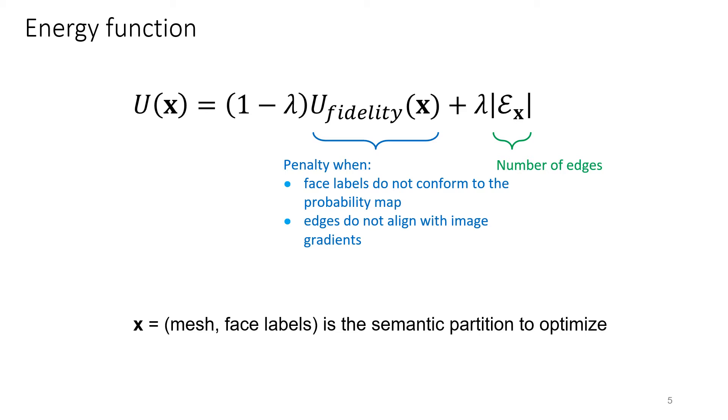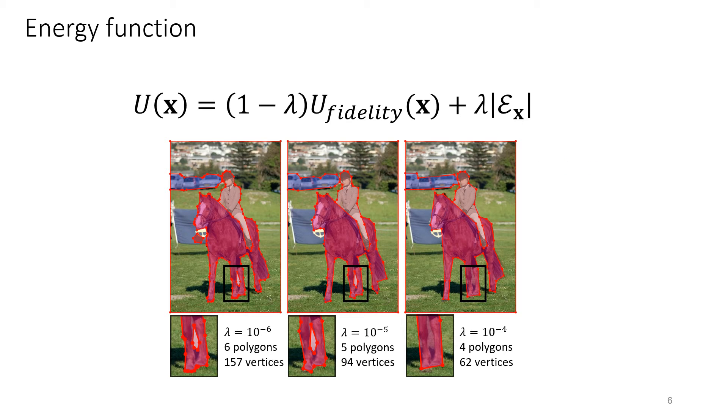The fidelity term penalizes when phase labels do not agree with the semantic probabilities, and when edges misalign with image gradients. The complexity term encourages low-complexity polygons with fewer edges. The two terms are balanced by a parameter lambda.